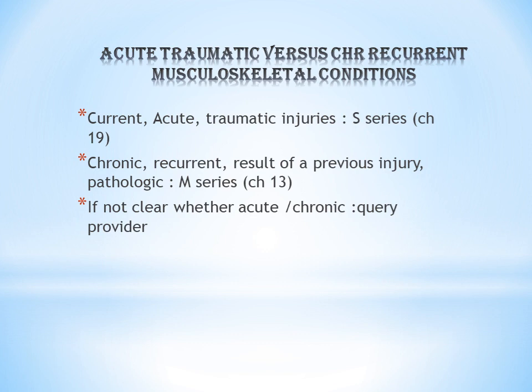If it is not clear from the documentation whether the fracture is acute or chronic, query the provider. When searching for a fracture code in the alphabetic index, identify the type — traumatic or pathologic. If it is traumatic, you will get S series codes; if it is pathologic, you will get M series codes.